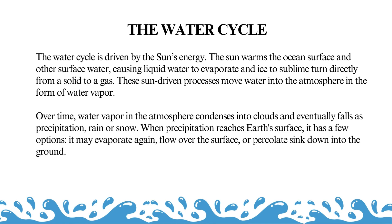The sun warms the ocean surface and other surface water, causing liquid water to evaporate and ice to sublime — turning directly from a solid to a gas. These sun-driven processes move water into the atmosphere in the form of water vapor. Over time, water vapor in the atmosphere condenses into clouds and eventually falls as precipitation — rain or snow.